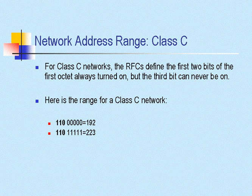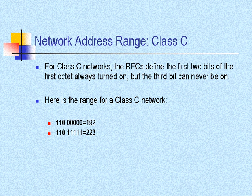For a Class C network, the RFC defines that the first two bits of the first octet always be turned on, but the third bit can never be turned on. That's how we came up with that range. The first two bits — 128 and 64 — start off that range at 192. And then if I was to leave that third bit off and add up all the other bits turned on, the total would be 223.